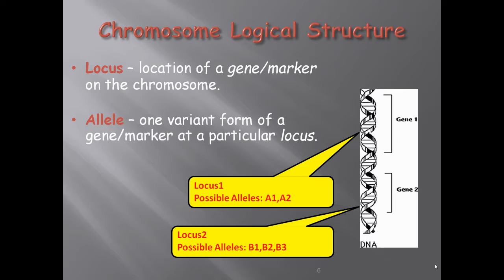Now we will look at chromosomal structure. A locus is the location of a gene or marker on the chromosome — all genes are arranged on chromosomes, and the locus is the specific location of a particular gene. An allele is one variant form of a gene at a particular locus. For example, at locus one there are possible alleles A1 and A2, and at locus two there are possible alleles B1, B2, and B3.